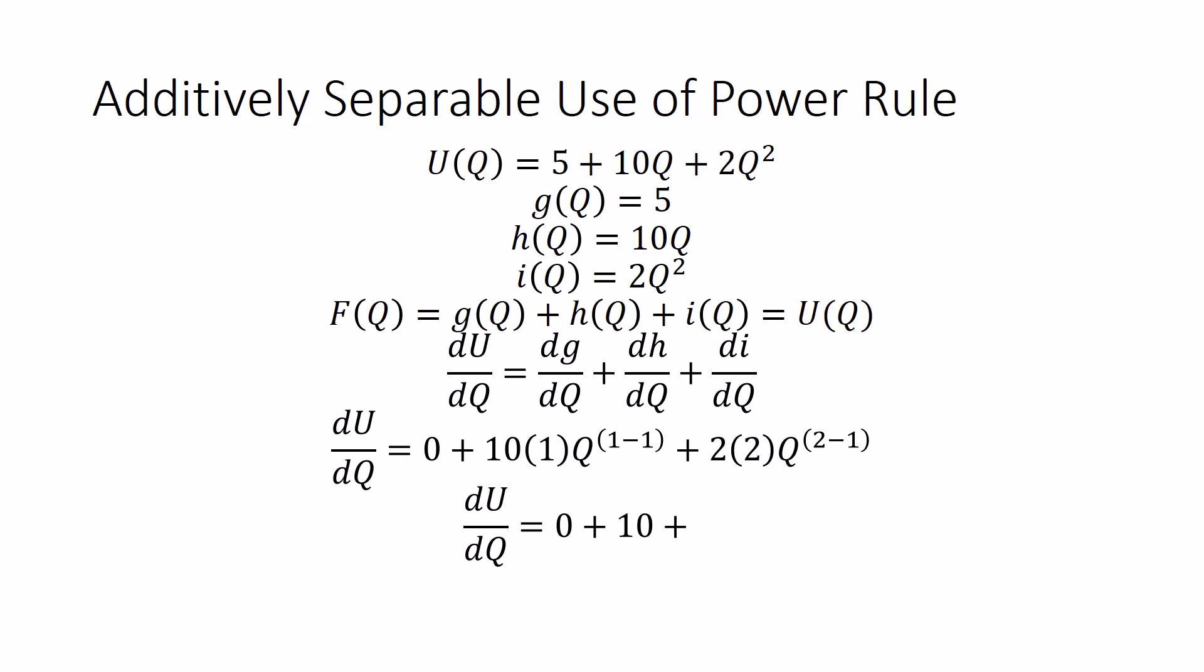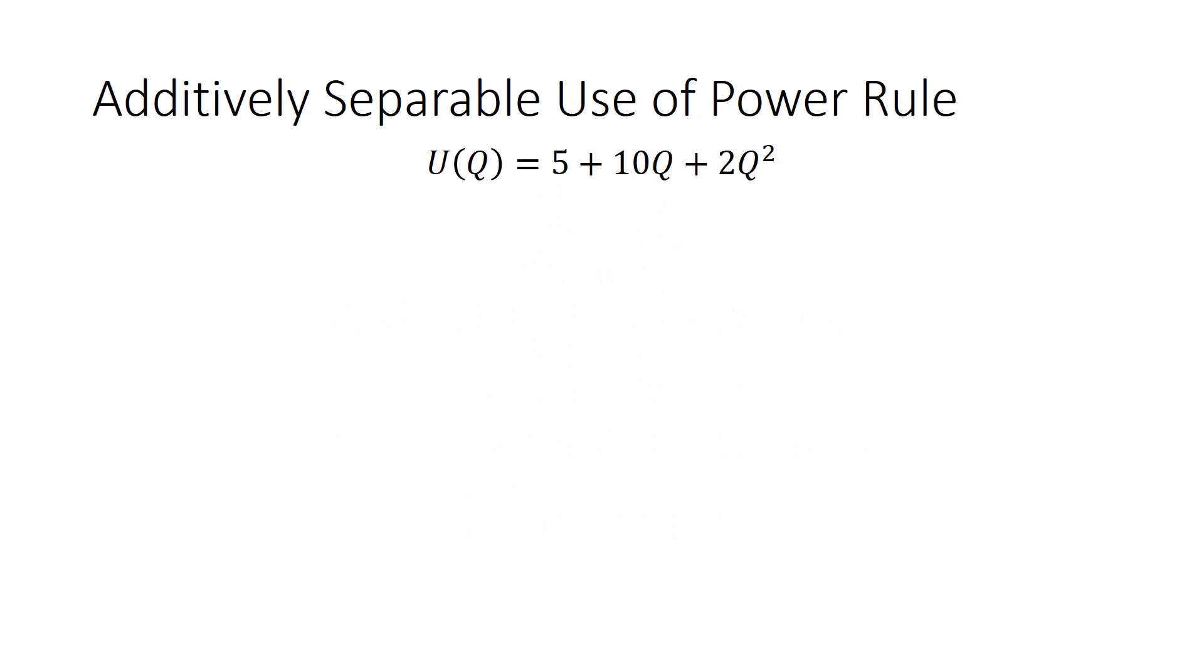du/dq is equal to 0 plus 10. 10 times 1 is 1. q to the 1 minus 1 is q to the 0, and anything raised to the 0th power is just 1. 10 times 1 is 1. Plus 4q. 2 times 2 is 4. 2 minus 1 is 1, and q to the 1 is q. So I am able to look at this utility function and solve for its marginal utility, which is just 10 plus 4q. Its slope will depend on where you are, what q. That's all the marginal utility is telling you. It's telling you a slope. In the case of nonlinear functions, the slope depends on q.